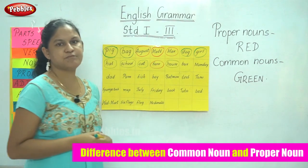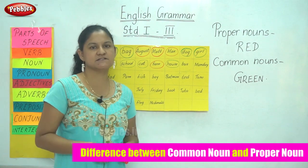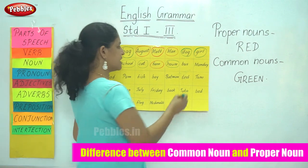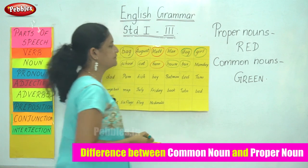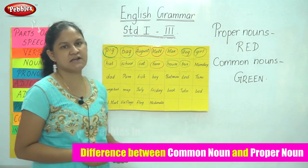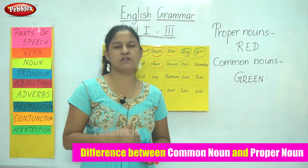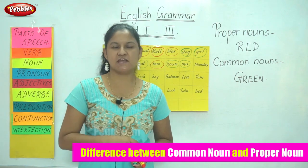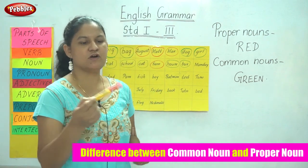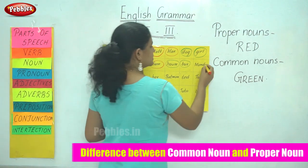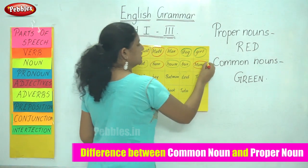Bus is a type of road transport and is a common noun, so I use my green sketch to circle the word bus. The next word is Monday. As I have already told you, the days of the week and months of the year always begin with a capital letter and are known as proper nouns. So I use my red sketch to circle the word Monday because it is a proper noun.